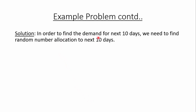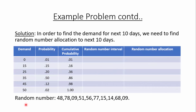To solve this problem, we need to find the demand for the next 10 days and determine the random number allocation. We make a table with the demand values — 0, 15, 25, 35, 45, and 50 — and their corresponding probabilities: 0.01, 0.15, 0.20, 0.50, 0.12, and 0.02. We then calculate the cumulative probability: 0.01, 0.16, 0.36, 0.86, 0.98, and 1.00.